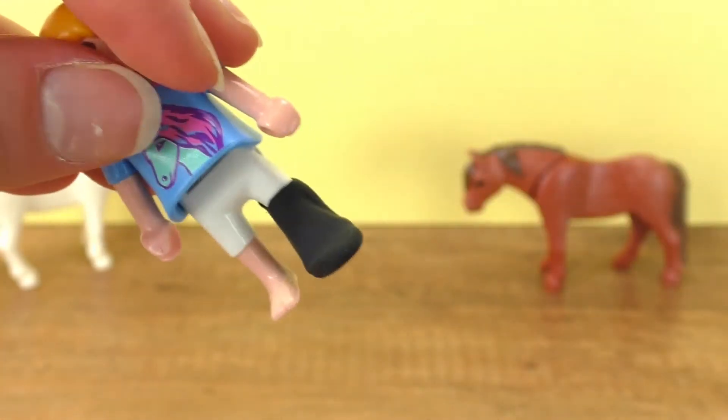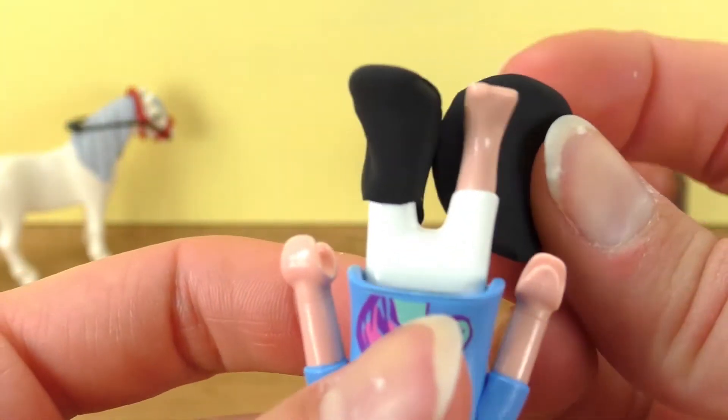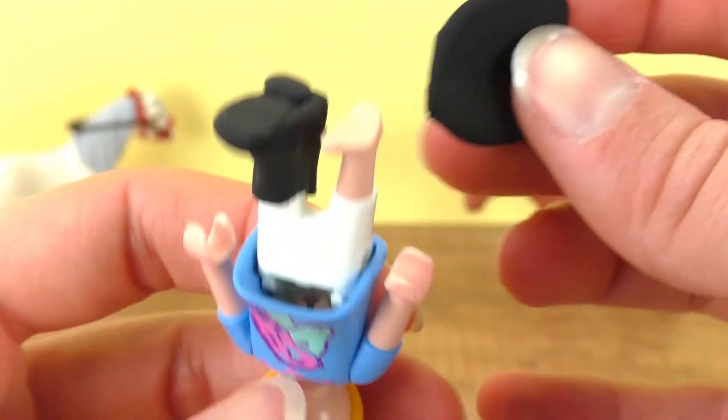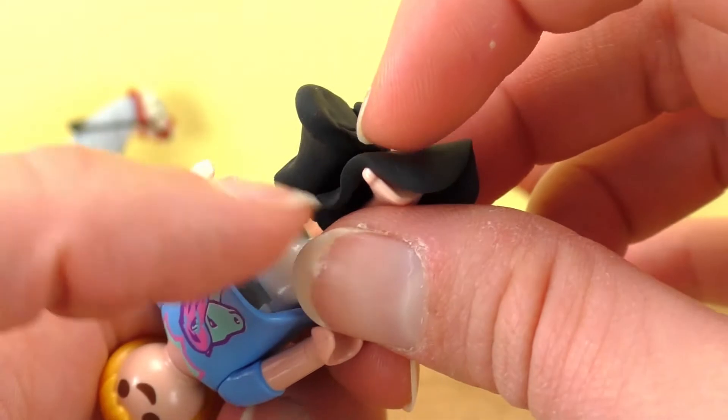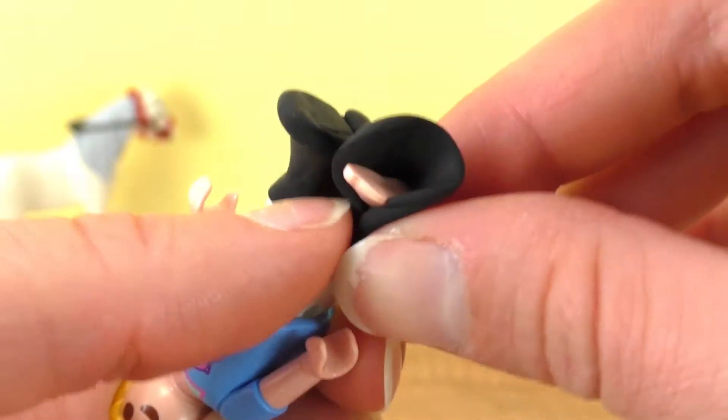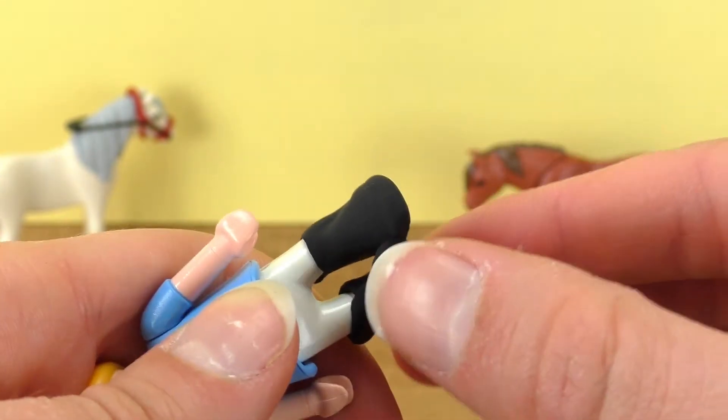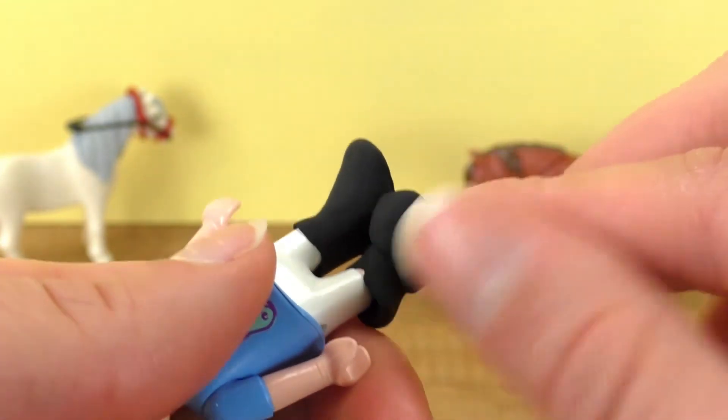All right, so of course now I have to make the second one. So I'm going to make it just like the first one. I have to be careful though because look, it's not hardened yet, the first one, so it'll stick if I touch them against each other. So I have to be super careful. Okay, wrap it around the leg and then the foot.